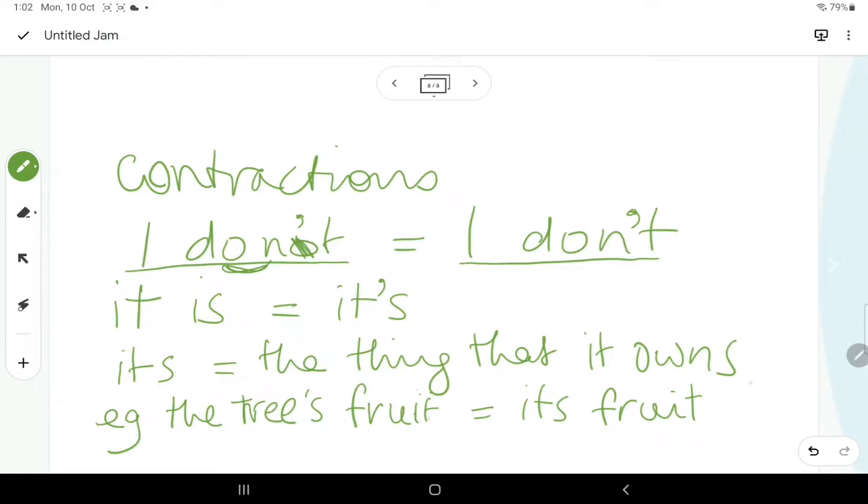So, its, no apostrophe, equals the thing that it owns. For example, if you've got a tree and its bearing fruit, you've got the tree's fruit. If you now want to use a pronoun instead of referring to the tree as the tree and you want to refer to it as it and you want to talk about its fruit, you've got its, no apostrophe, fruit.